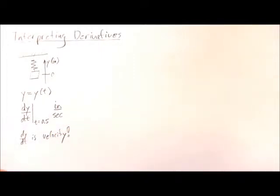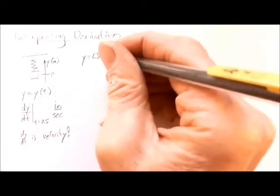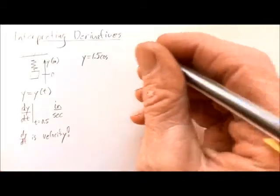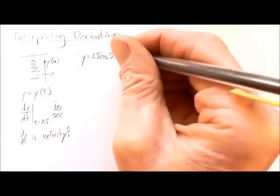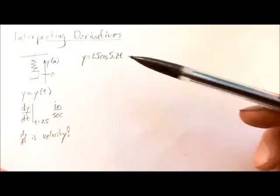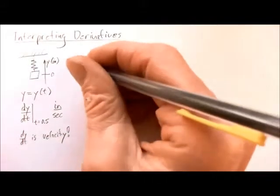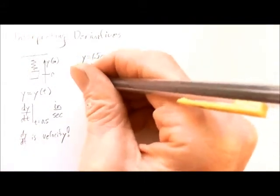Let's look at a specific example. Let's suppose that we knew that the equation of motion for this mass was y equals 1.5 cosine of 5.2t. When we do calculations, all of our calculations in this class with trig functions are going to be done in radians, because all of our calculus depends on working in radians. So don't forget — calculator in radians. So let's take the derivative of this, dy/dt.